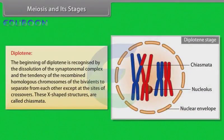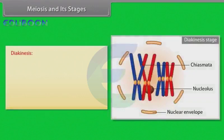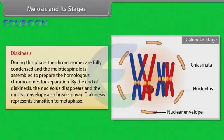Pachytene stage is followed by diplotene stage. The beginning of diplotene is recognized by the dissolution of synaptonemal complex and the tendency of the recombined homologous chromosomes of the bivalents to separate from each other except at the sites of crossovers. These X-shaped structures are called chiasmata. The final stage of meiotic prophase one is diakinesis. This is marked by terminalization of chiasmata. During this phase, the chromosomes are fully condensed and the meiotic spindle is assembled to prepare the homologous chromosomes for separation. By the end of diakinesis, the nucleolus disappears and the nuclear envelope also breaks down. Diakinesis represents transition to metaphase.